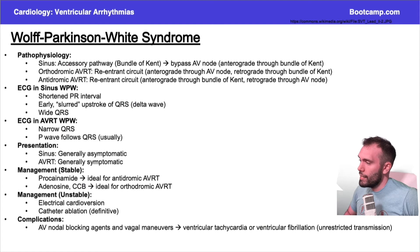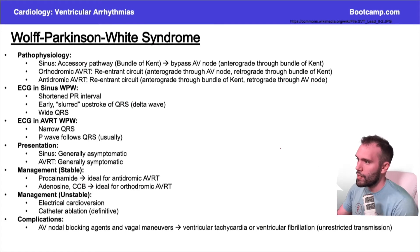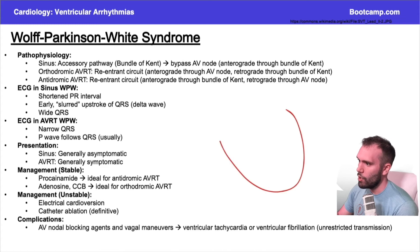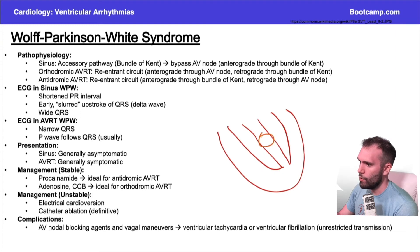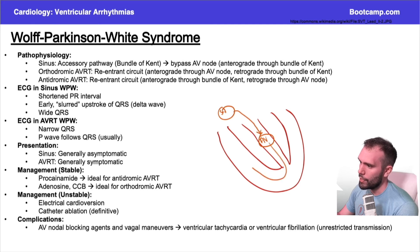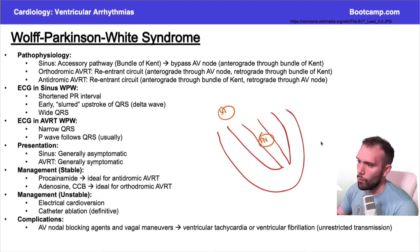Wolf-Parkinson-White syndrome involves this accessory pathway concept. Drawing a heart for reference: the AV node is in the right atrium, and normally the SA node sends a signal down to the AV node, which eventually conducts the signal out to the ventricles. That's normal conduction.